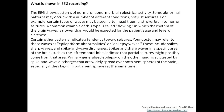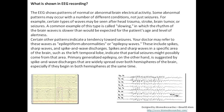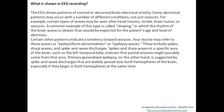So what is shown in the EEG recording? The EEG shows patterns of normal or abnormal brain electrical activity. The EEG machine records the spontaneous brain activity — whether the patient is normal or abnormal. Some abnormal patterns may occur with a number of different conditions, not just seizures. For example, certain types of waves may be seen after head trauma, stroke, brain tumor, or seizures. A common example of this type is called slowing, in which the rhythm of the brain wave is slower than would be expected for the patient's age and level of alertness.